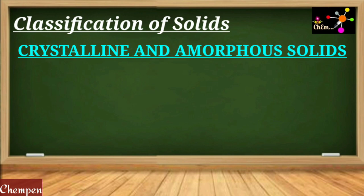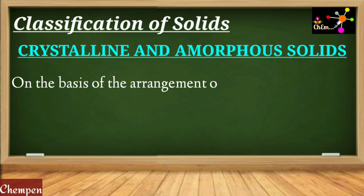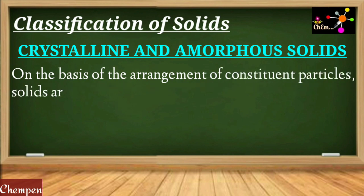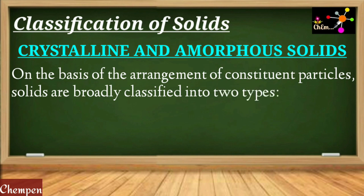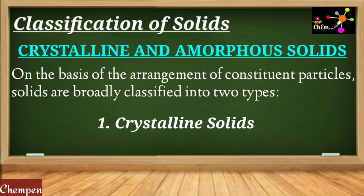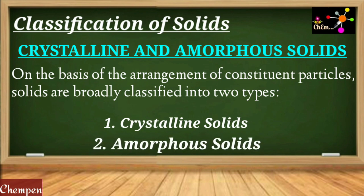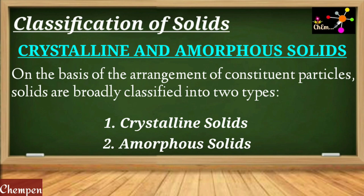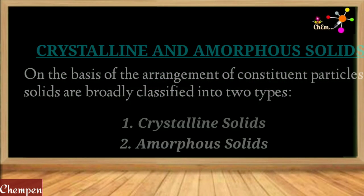We will now classify solids. On the basis of the arrangement of constituent particles, solids may be classified into two categories: one is crystalline solids and the second is amorphous solids. This classification is based on the arrangement of constituent particles, which may be atoms, molecules or ions.